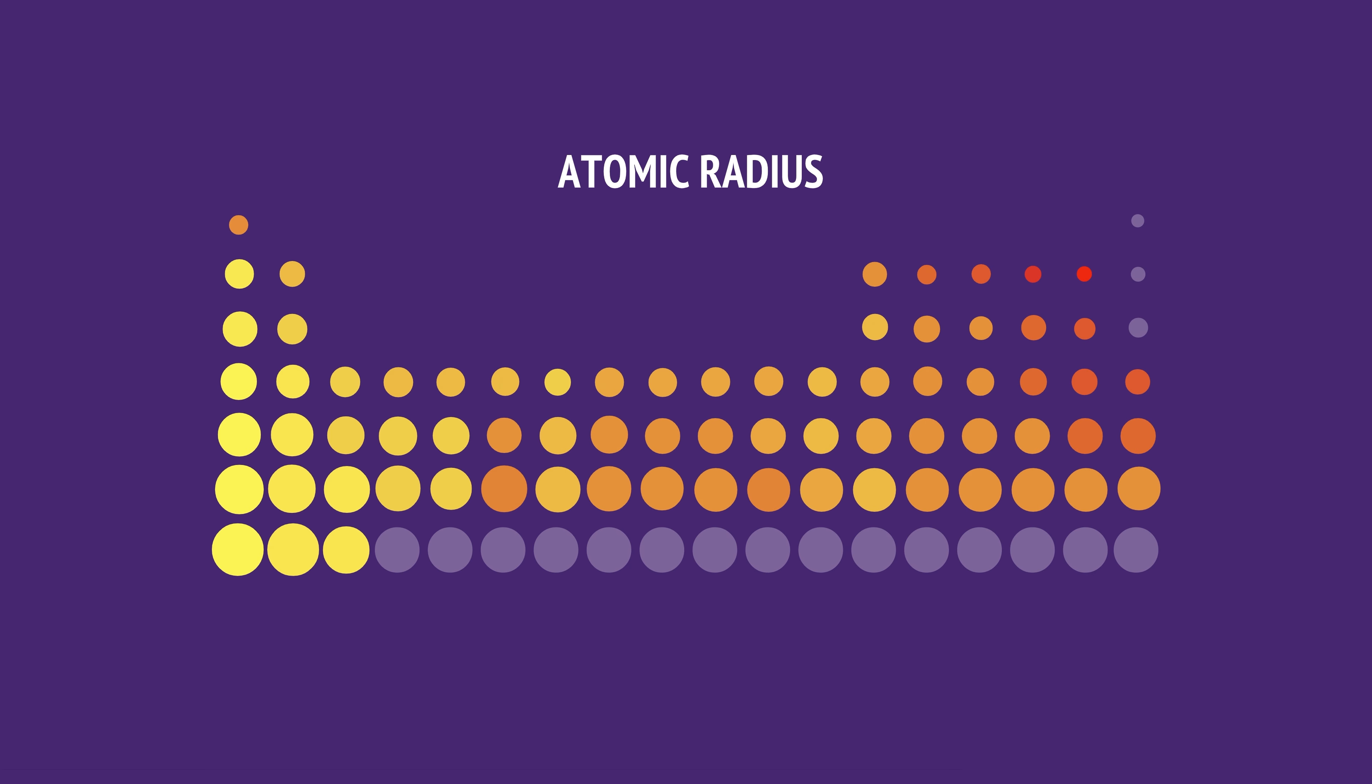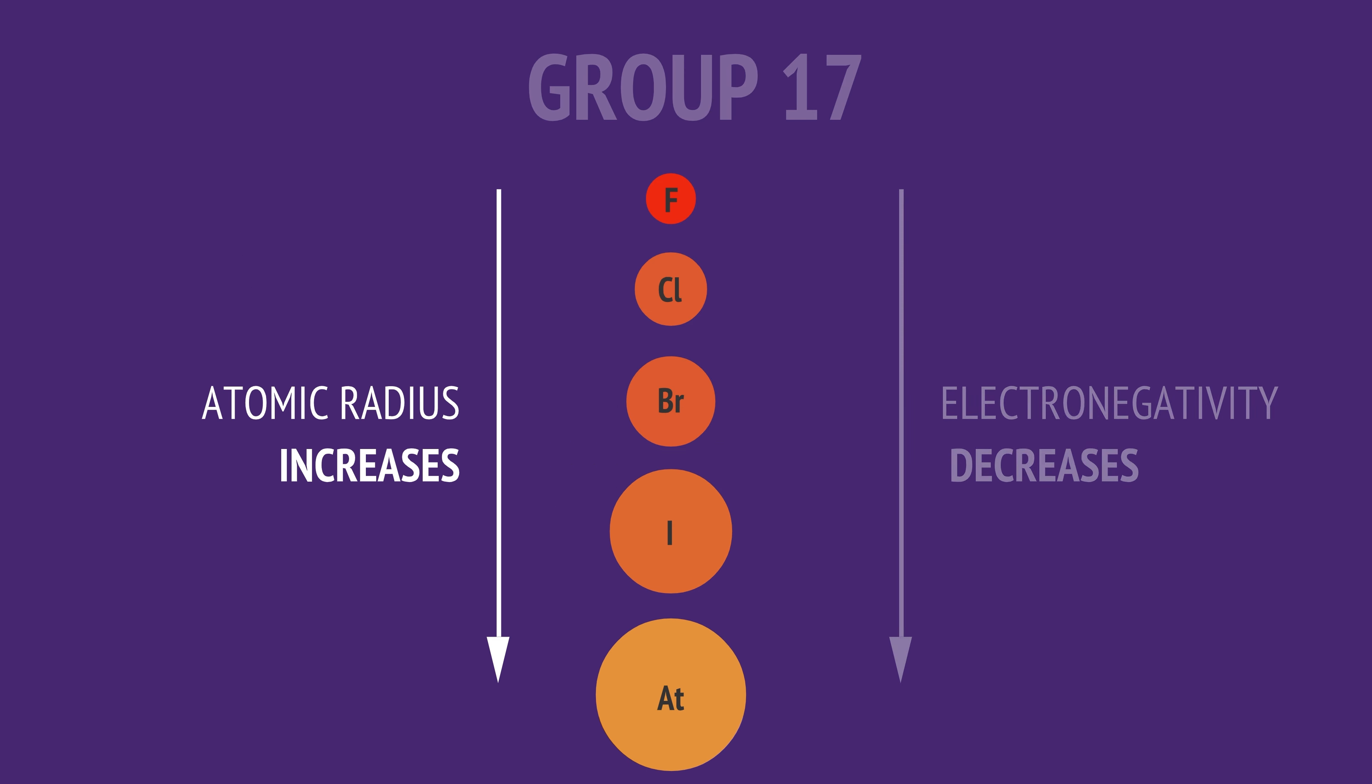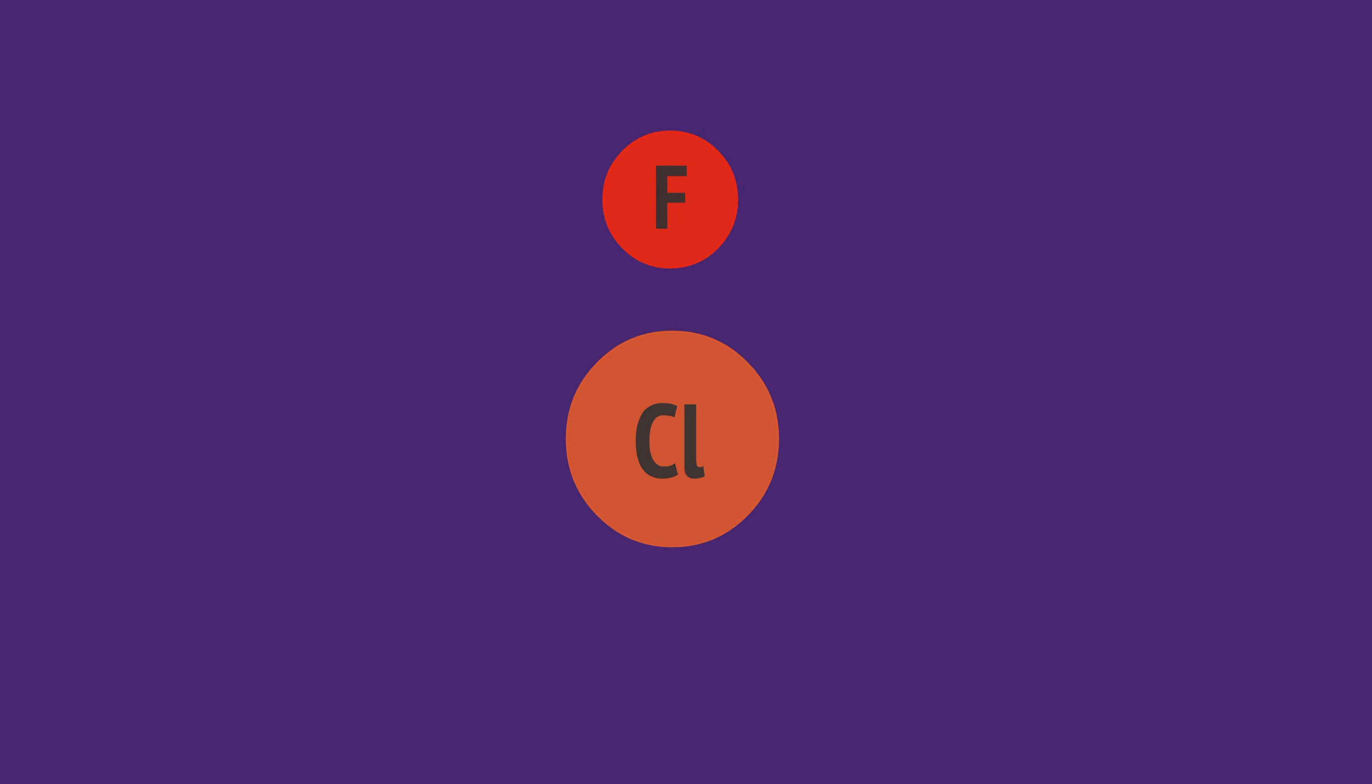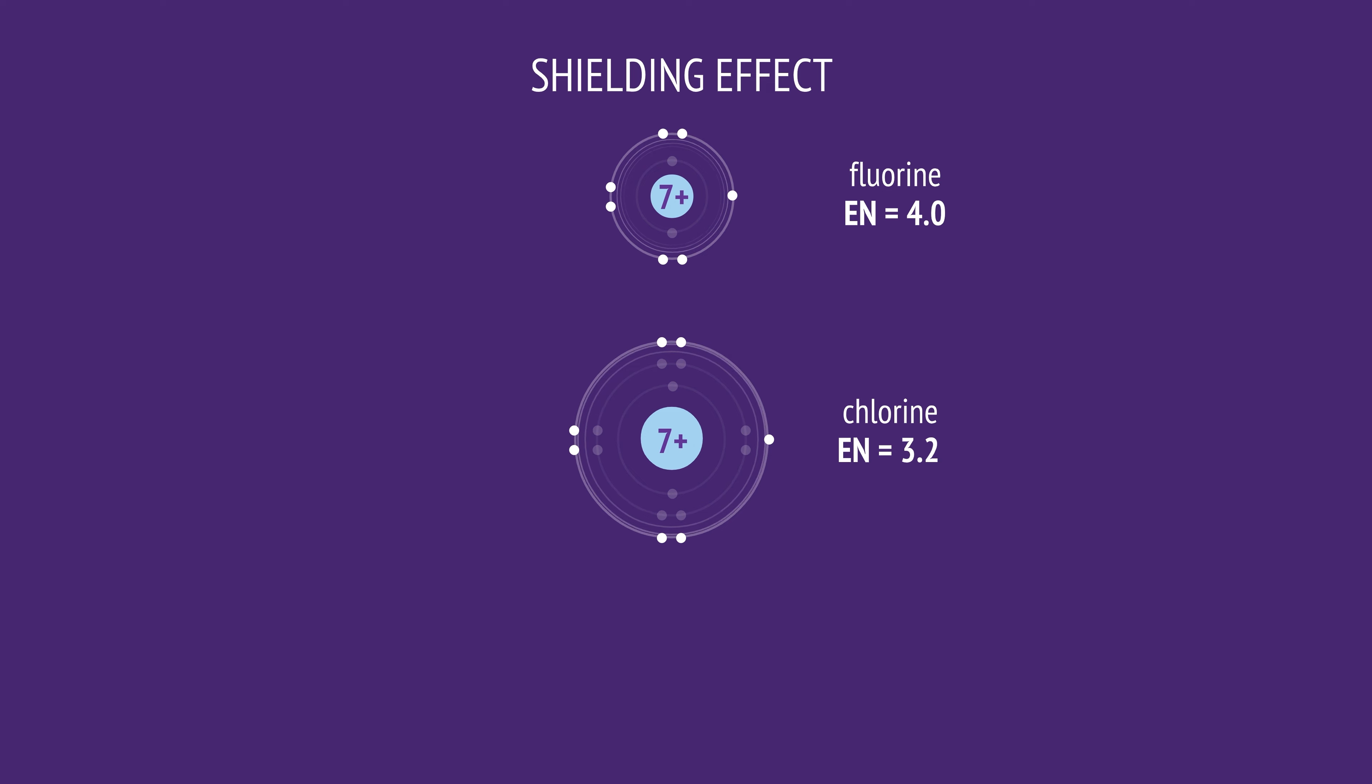We can also see a trend as we move down a group. Looking at group 17, the halogens, as atomic radius increases down the group, the electronegativity decreases. This is because additional filled electron shells shield the nucleus, which reduces the effective nuclear charge that can pull on the outermost electrons.